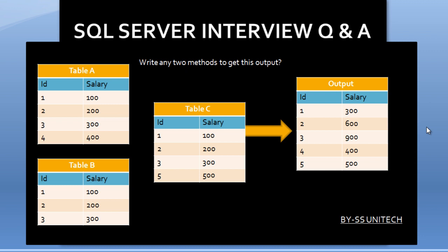As we can see here, we are having three input tables: table A, table B, and table C. All these tables are having two columns — first is ID, second is salary. In the output, we are also having only two columns, ID and salary. We just want to combine all the salaries according to their IDs.